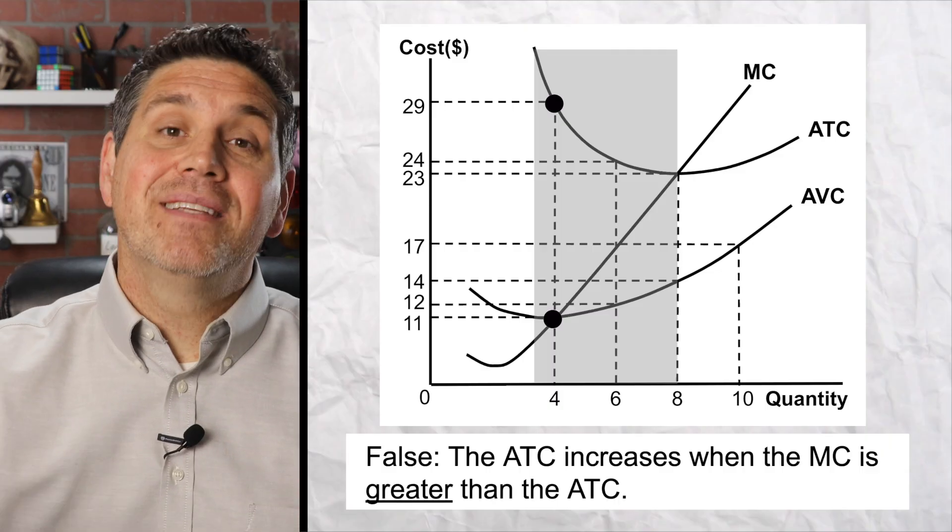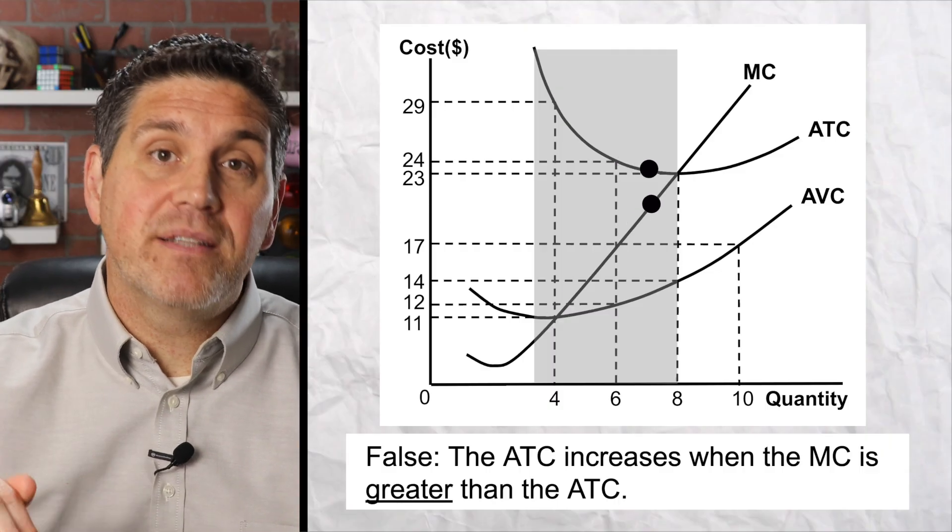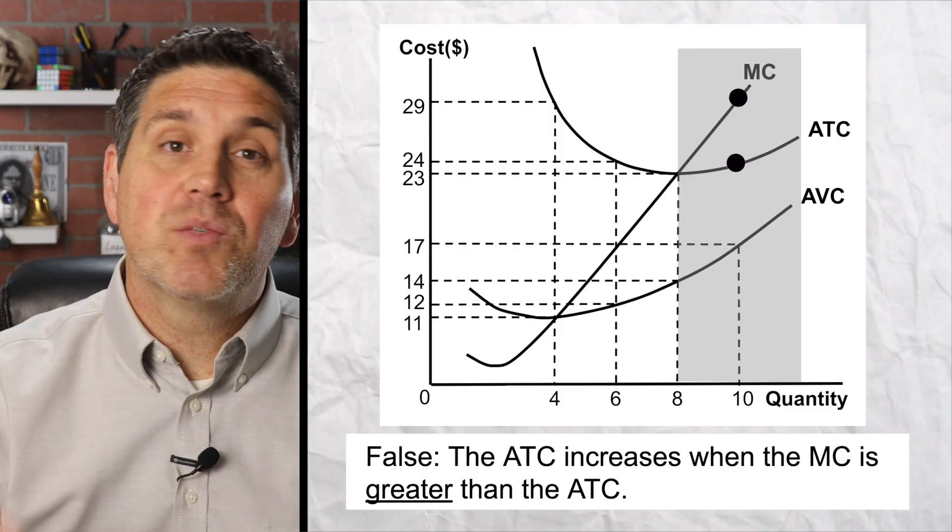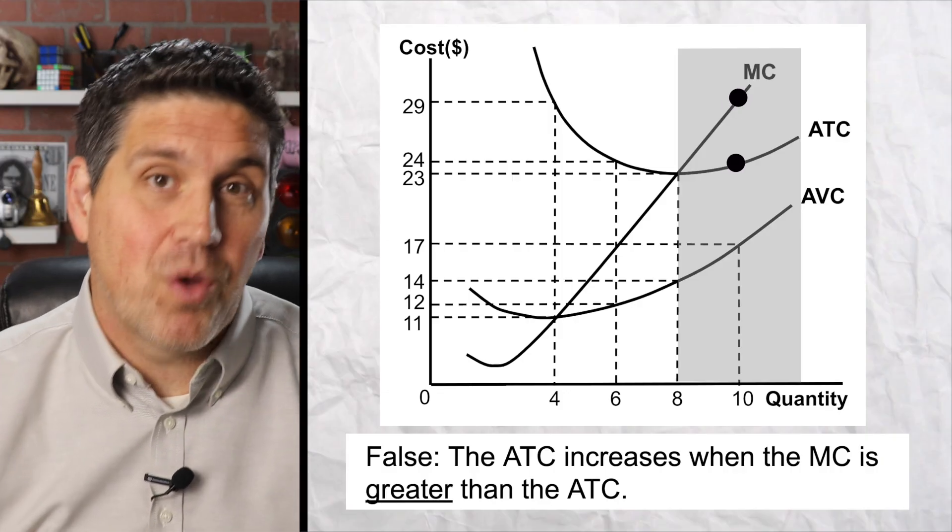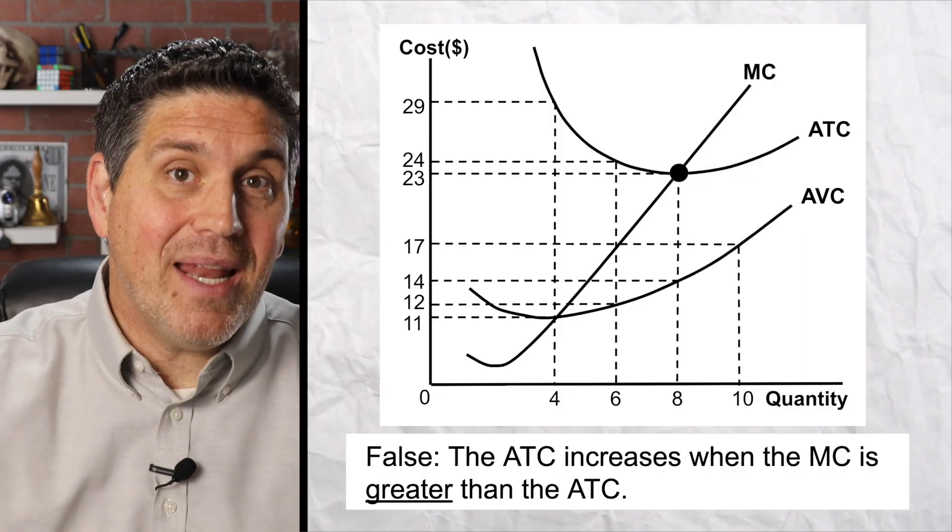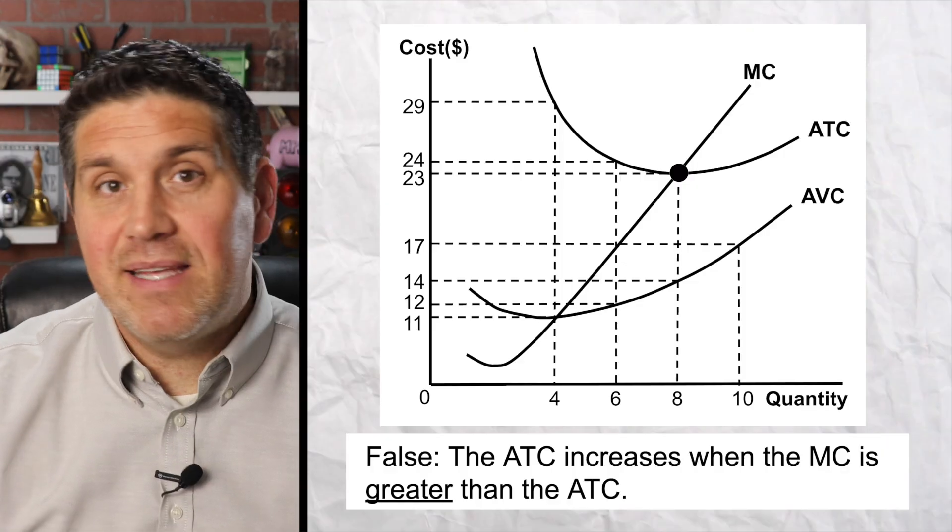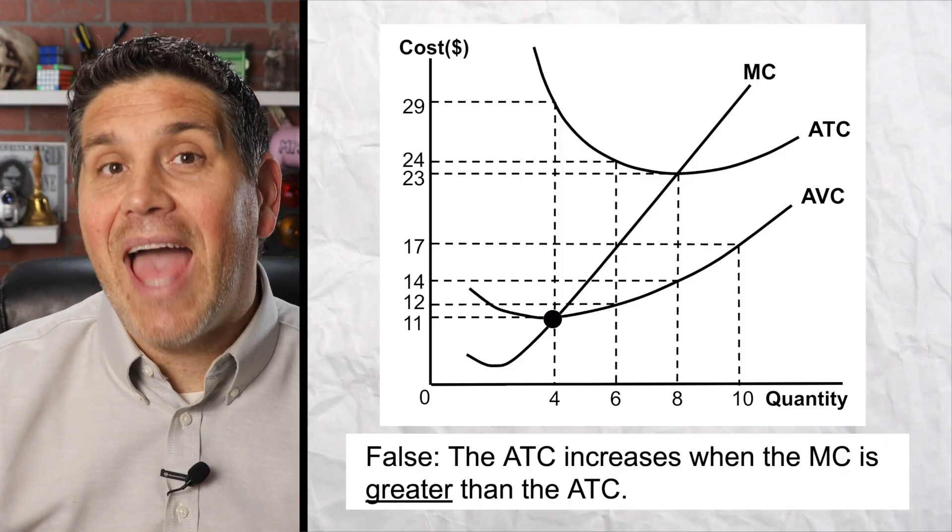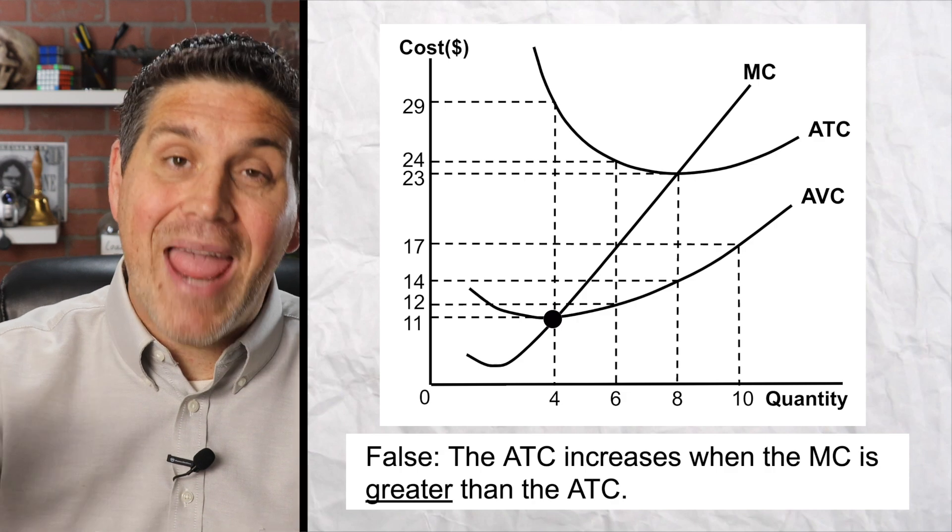What you have to remember is the average total cost is gonna decrease when the marginal cost is below the average total cost. And the average total cost is gonna increase when the marginal cost is above the average total cost. And that means this point right here is the minimum ATC. And this relationship applies to the average variable cost. The marginal cost hits the average variable cost at the minimum AVC.